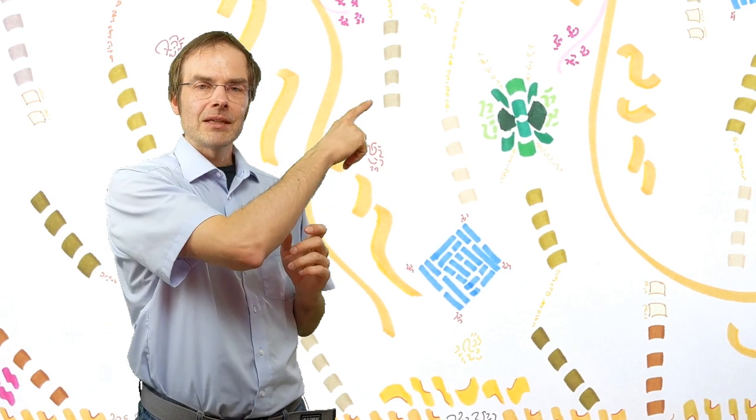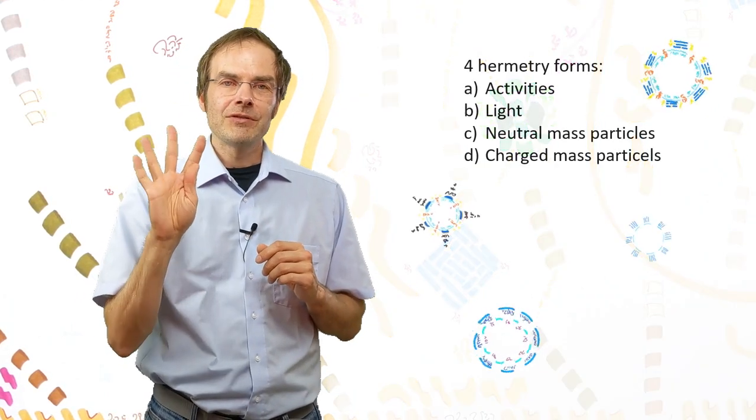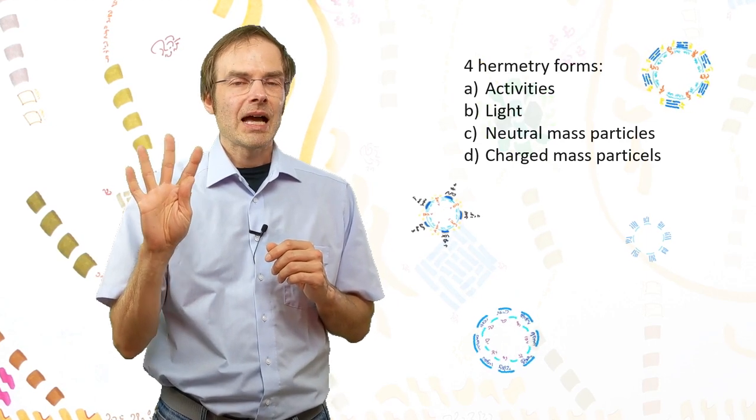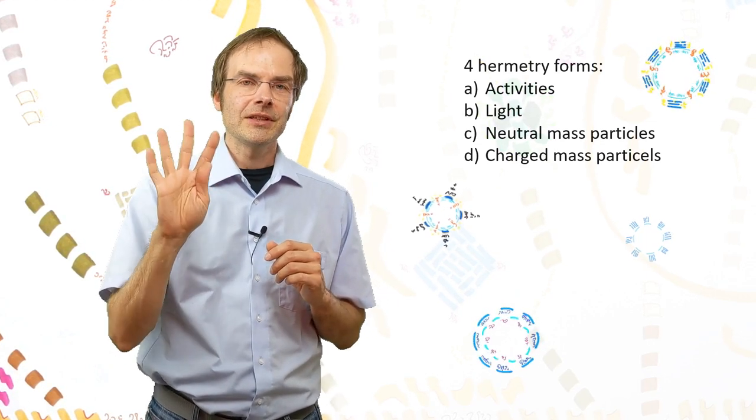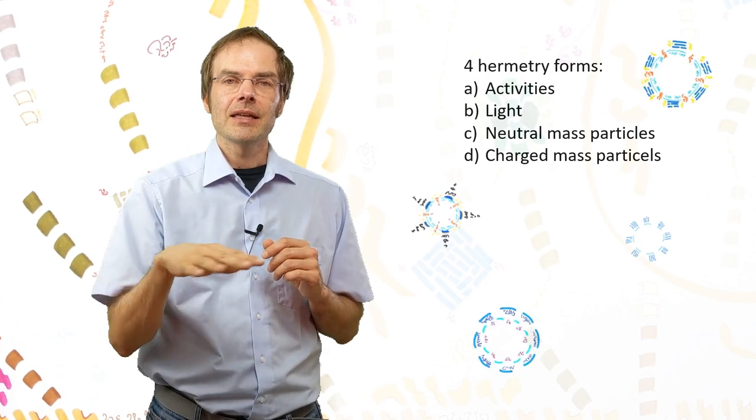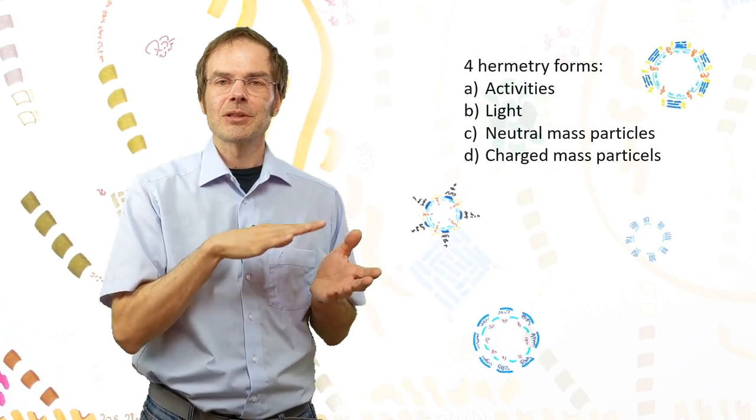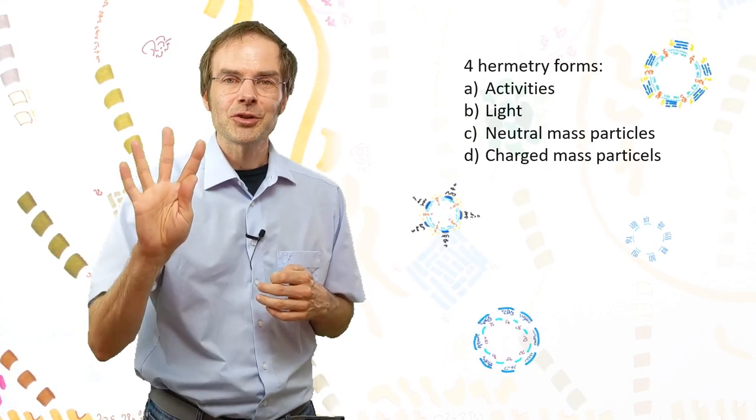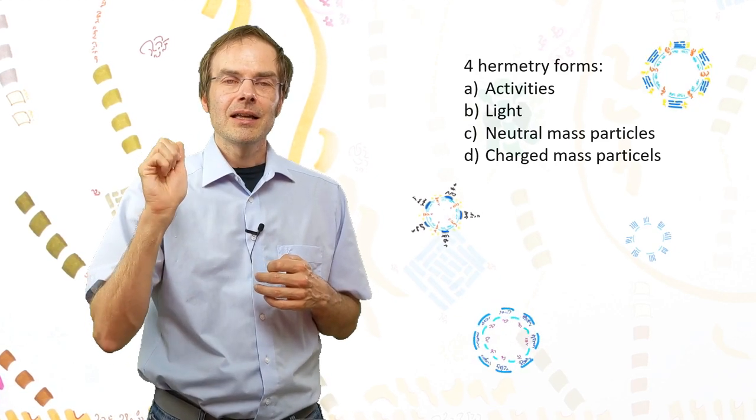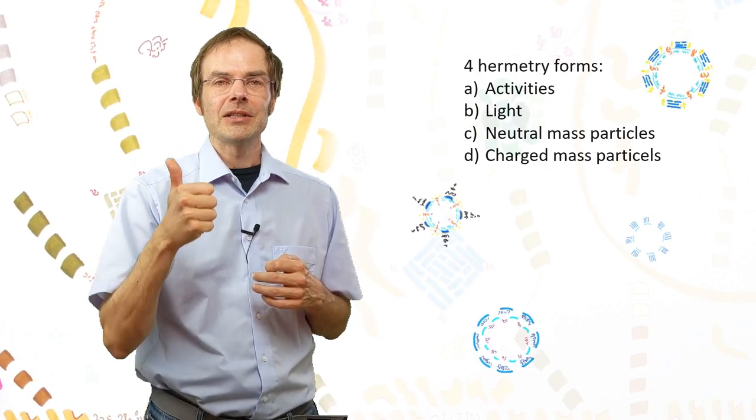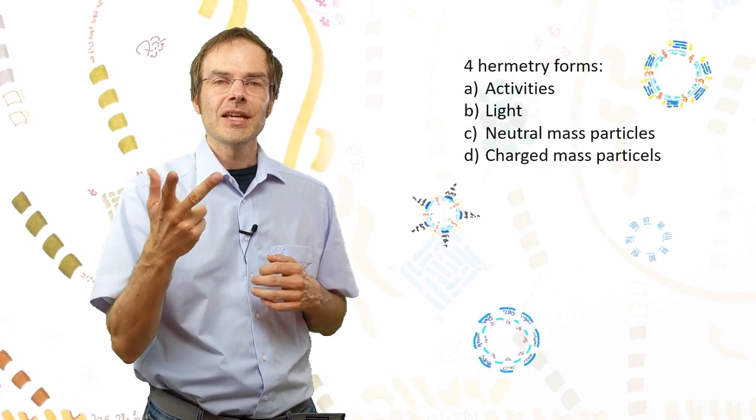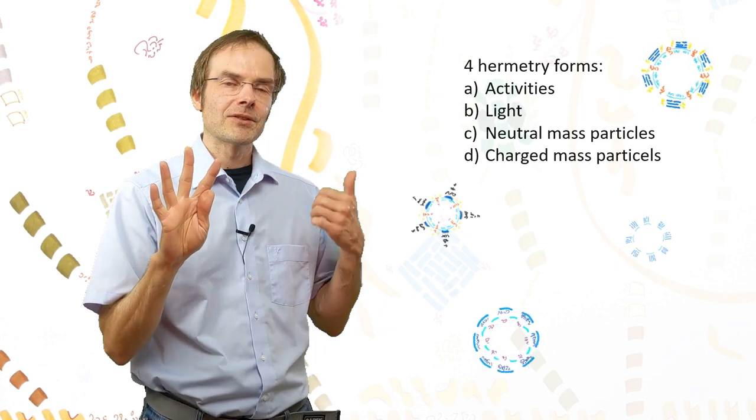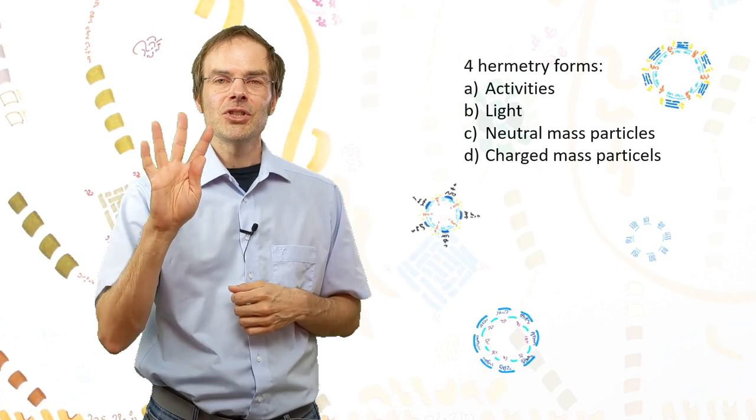And now we have to come back to elementary particle physics. If you remember that video, there are four different types of hermetry forms—that is, deformations of the underlying metronic grid, this six-dimensional grid that underlies reality. There are masses, mass particles charged and uncharged. There are photons. And then there is this fourth type, actually it's the first type in Heim's list, which he called activities.